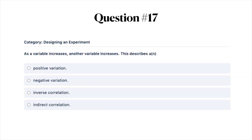Next question: as a variable increases, another variable increases. This describes a: A, positive variation; B, negative variation; C, inverse correlation; or D, indirect correlation.